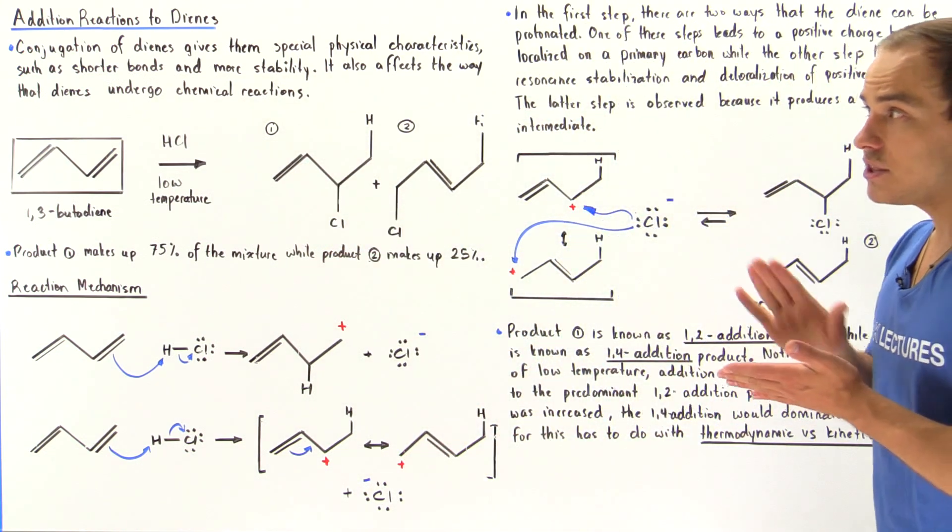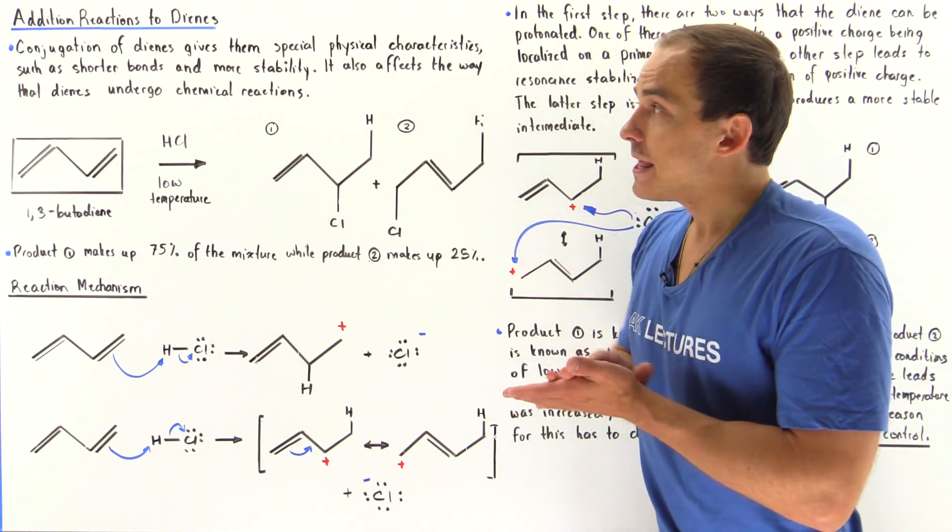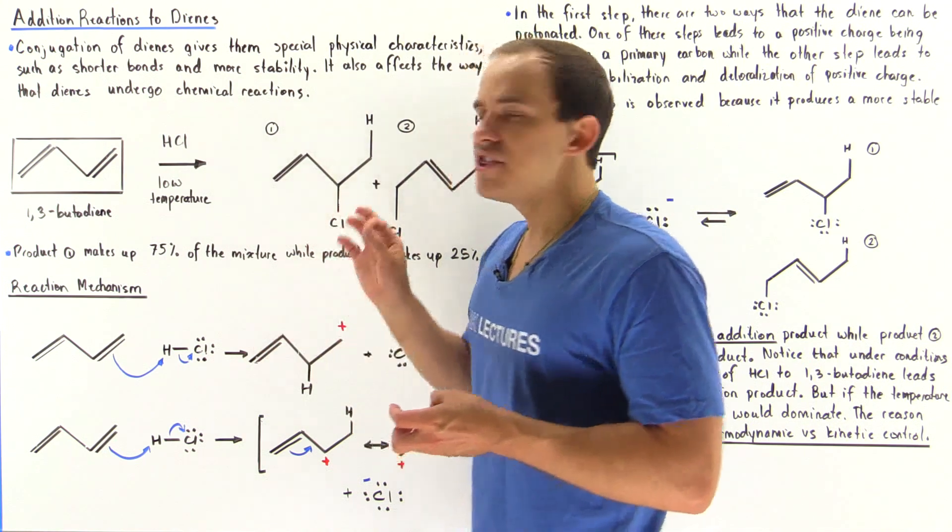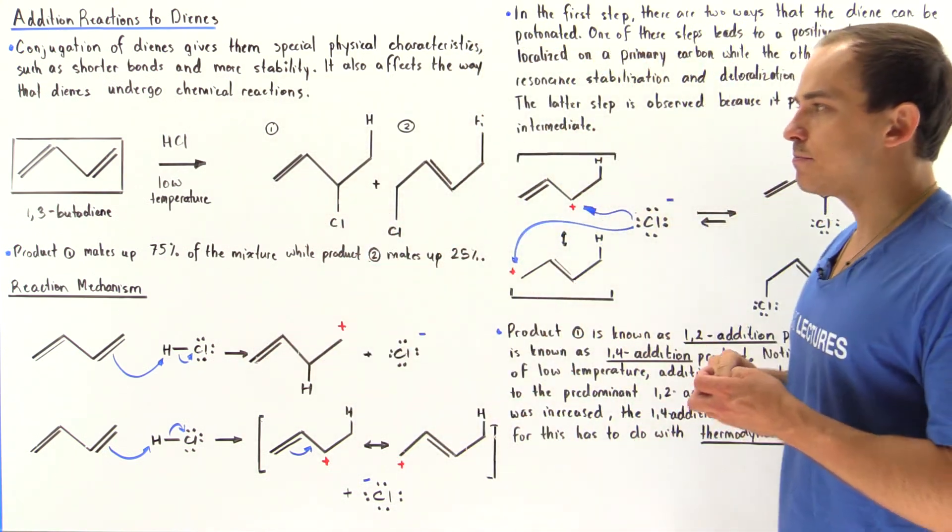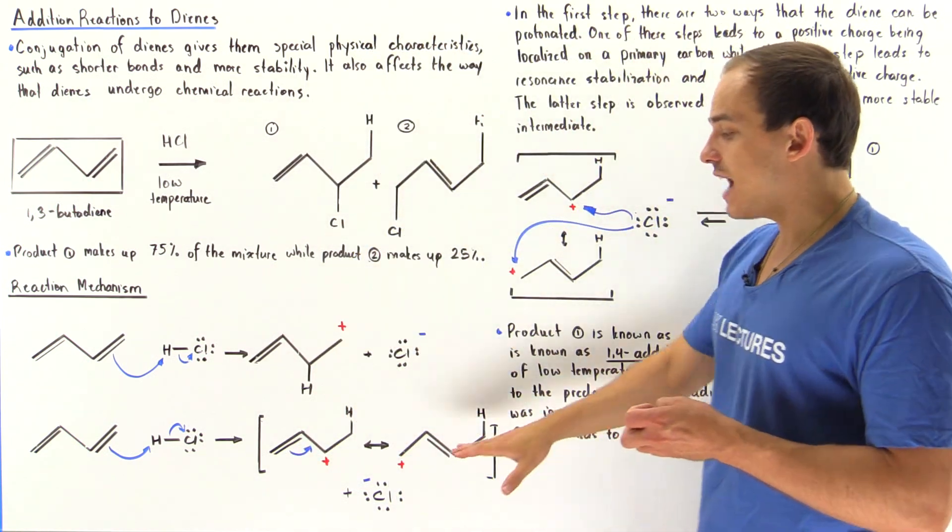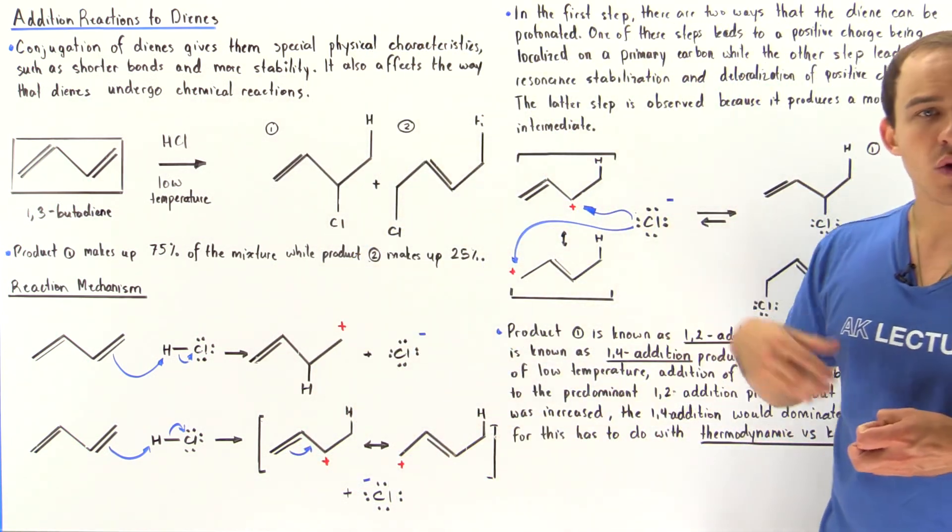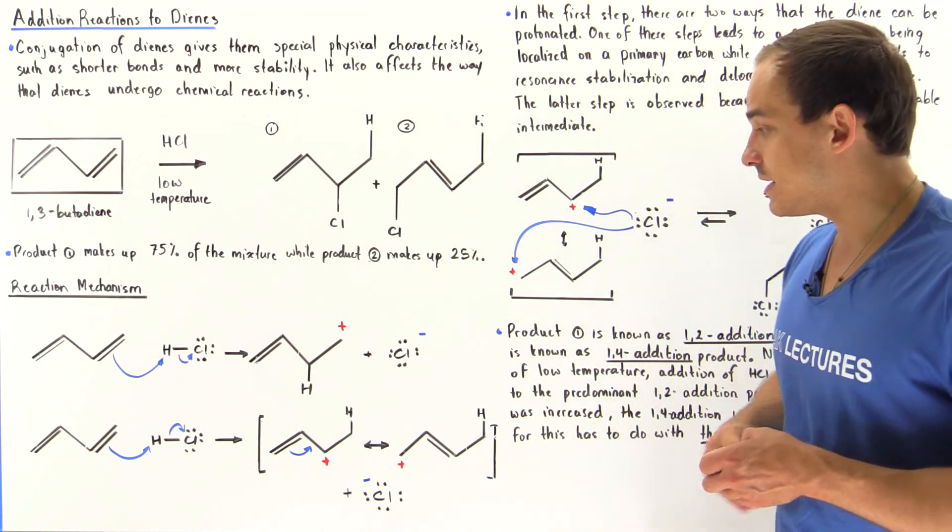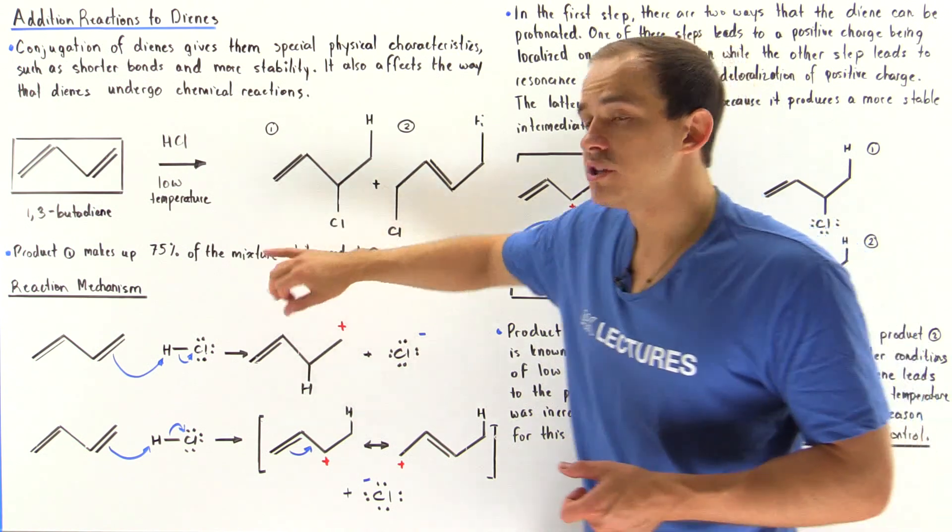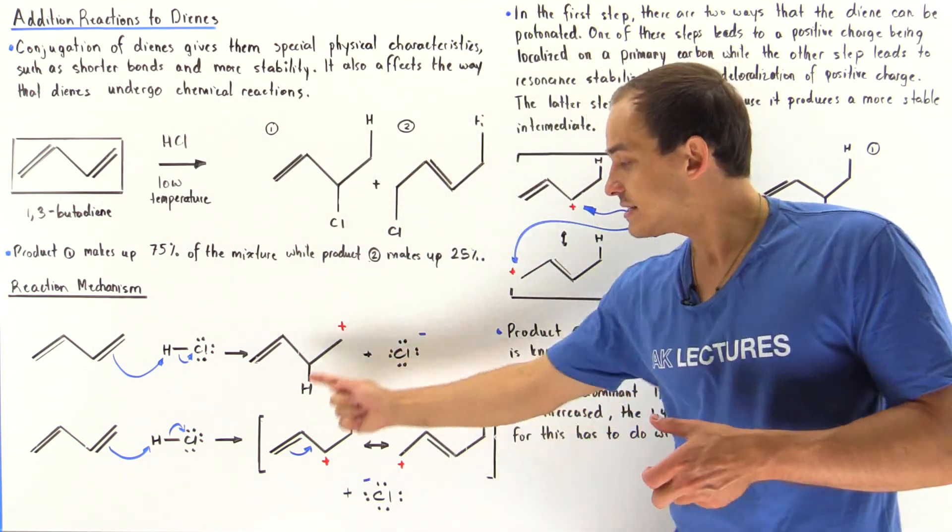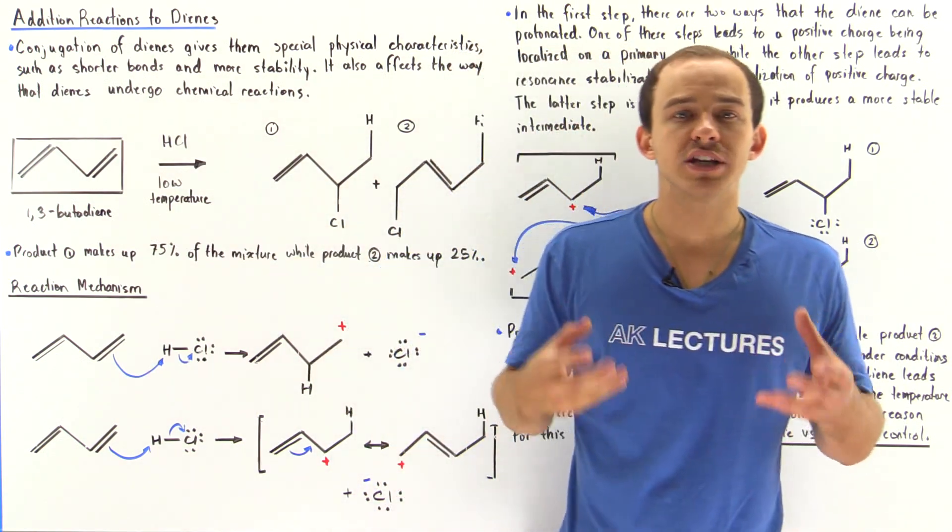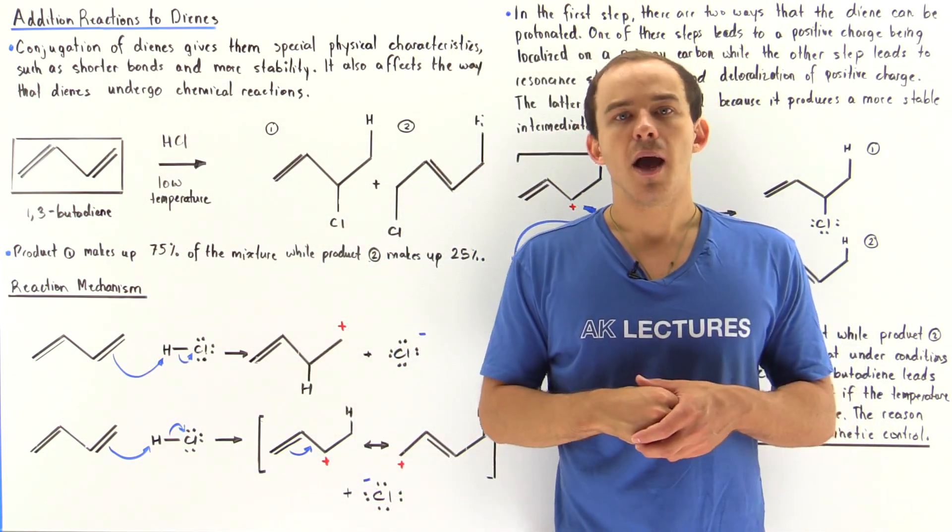So once again, we see that in this lecture, conjugation can actually determine the pathway that our reaction will take place. Conjugation influences the way that 1,3-butadiene will undergo a chemical reaction. Specifically in this step, this step will predominate and this step will not occur because this has resonance stabilization as a result of our conjugated system, conjugated molecule.